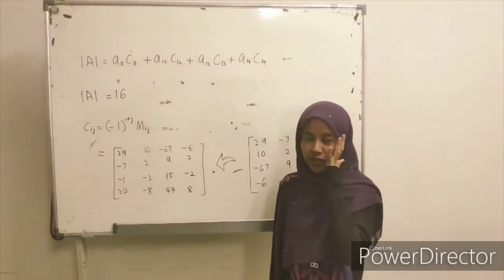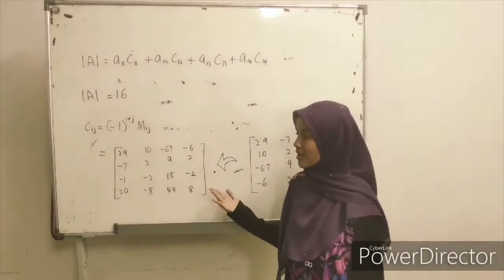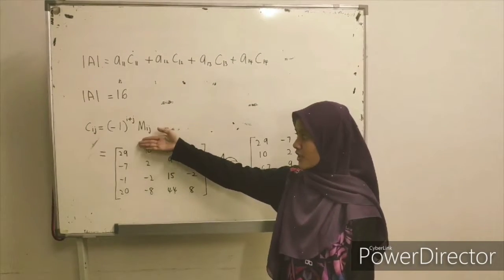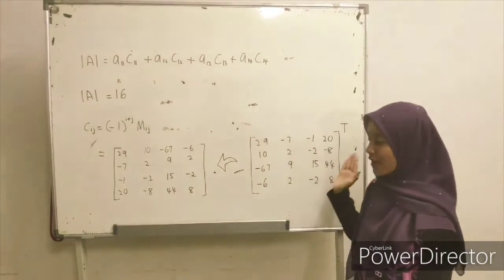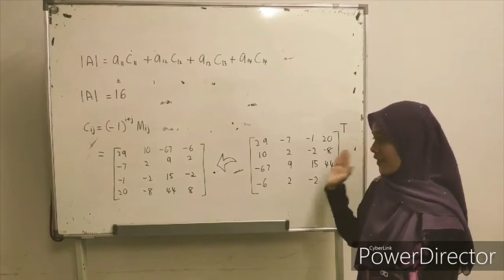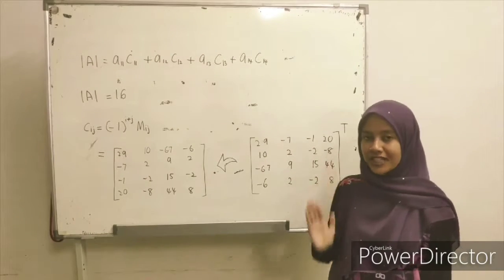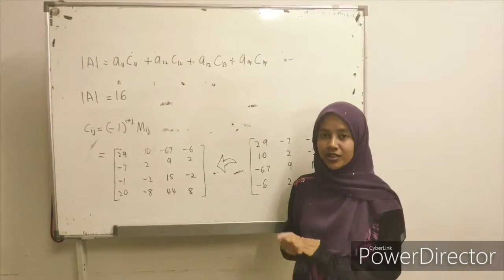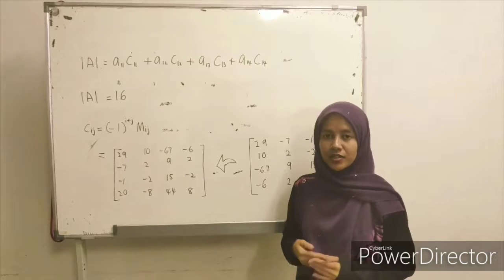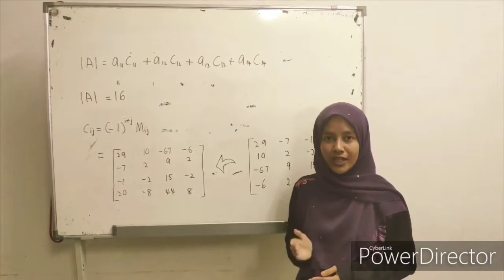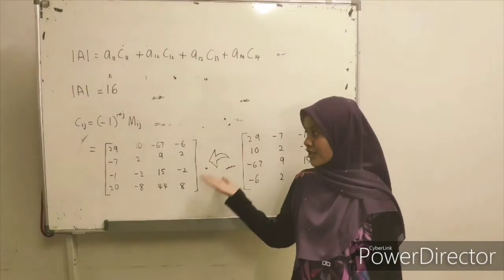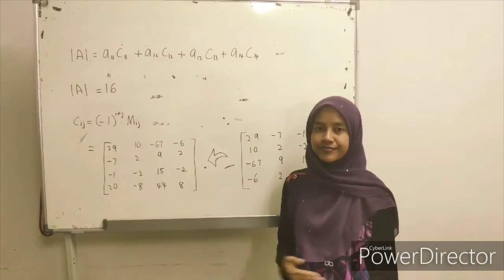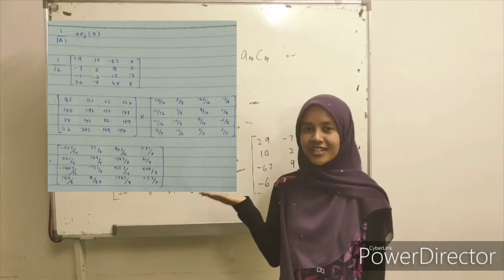Next, we must find the cofactor for the matrices which we use this formula and then we got the answer. Then, we will have to transpose the cofactor. The final inverse for this matrix is that we must use the formula which is 1 over the determinant multiplied with the transpose cofactor given. And this is the final answer.